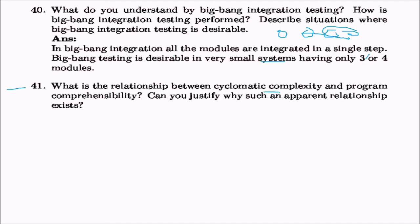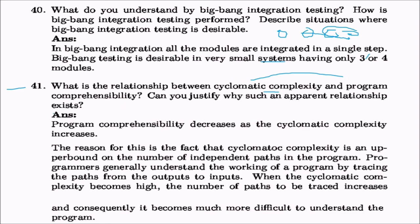What is the relationship between cyclomatic complexity and program comprehensibility? Program comprehensibility decreases as cyclomatic complexity increases. The reason is that cyclomatic complexity is an upper bound on the number of independent paths in a program. Programmers understand a program by tracing paths from outputs to inputs; when cyclomatic complexity is high, the number of paths to trace increases, making the program much more difficult to understand.